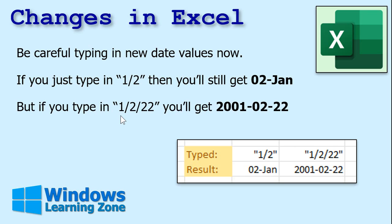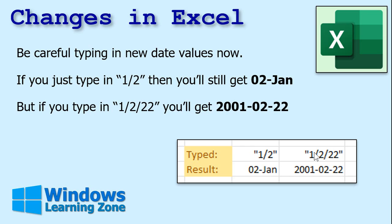But if you type in 1/2/22, you're going to get 1-2-22 in the new format — it's going to interpret that as year, month, day. Even though you're expecting the old format, it's going to convert it, so be careful. You can still type in the ISO format directly if you want to use the full year.